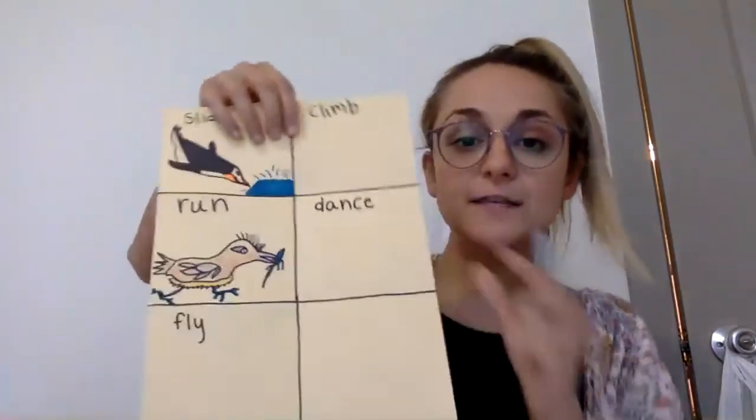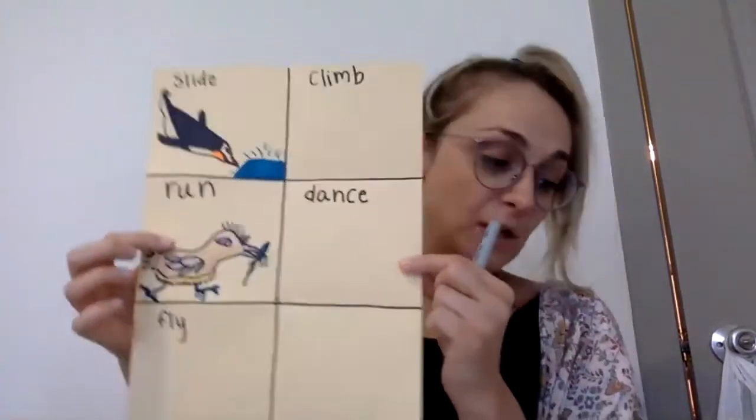Who can think of another way an animal moves? We have two more ways. I remember we learned about a spider that does something to impress its mate. What does it do? We learned about a spider that dances — a spider jumps and dances around. So in my next box I'm going to write the word dance, and I would draw a spider dancing and jumping around to impress its mate.